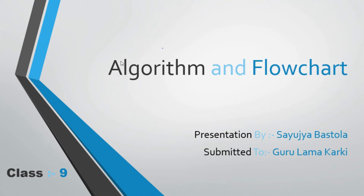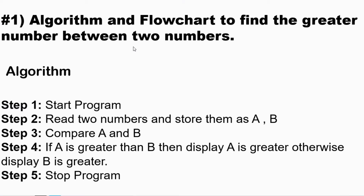We know that an algorithm is a step-by-step procedure written in English language, and a flowchart is the pictorial representation used to solve a program. In this video you will be learning about some questions on algorithm and flowchart. Question number one: find an algorithm and flowchart to find the greater number between two numbers.